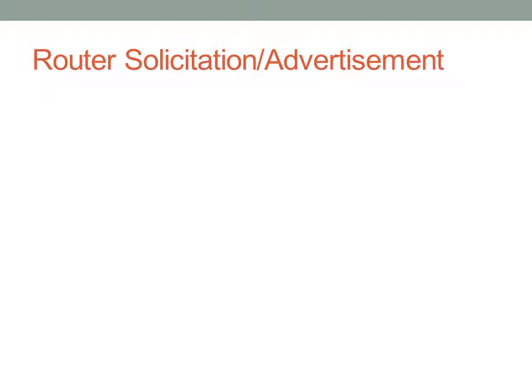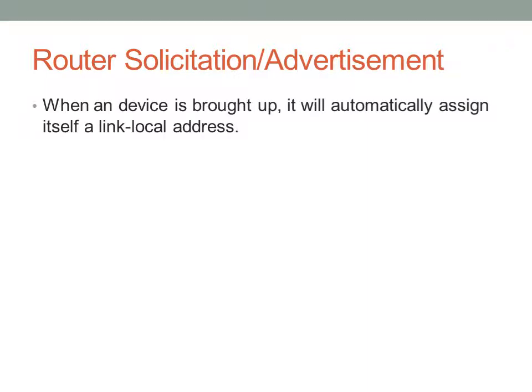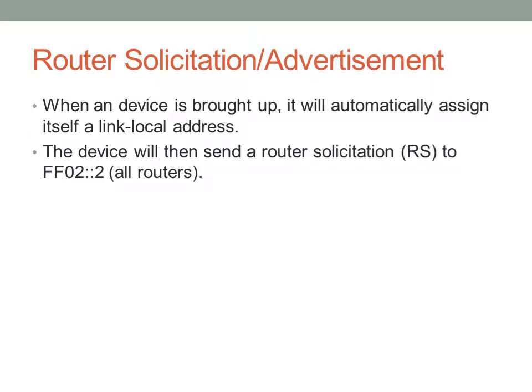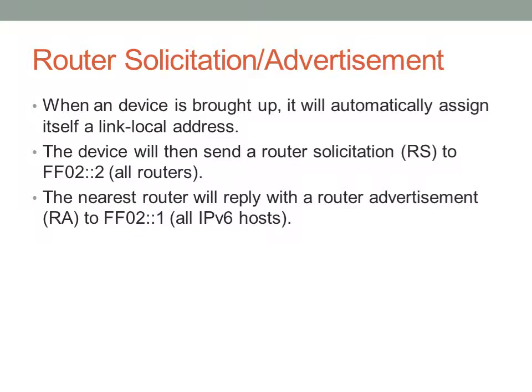Router solicitation and advertisement is a new process — this is how SLAAC is performed. When a device is brought up, it automatically assigns itself a link-local address, which is that FE80 address we talked about. Then the device sends a router solicitation to FF02::2, which is a multicast address specifically reserved for routers. All routers listen on FF02::2. The nearest router replies with a router advertisement to FF02::1, which is the multicast address reserved for every IPv6 host.